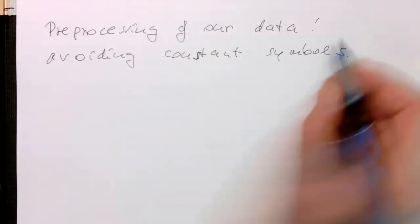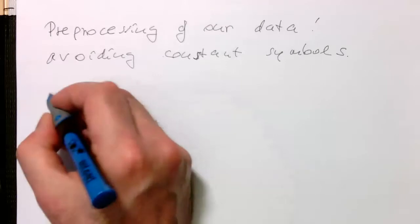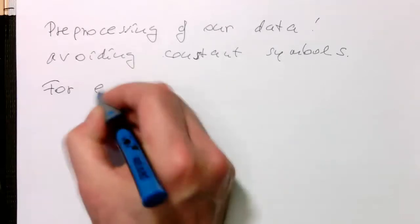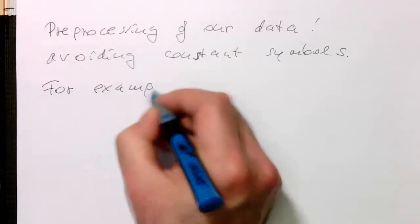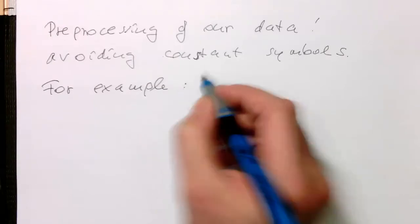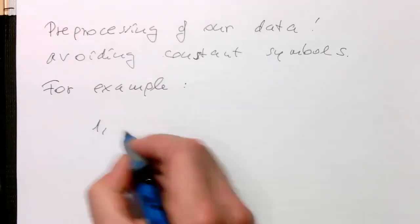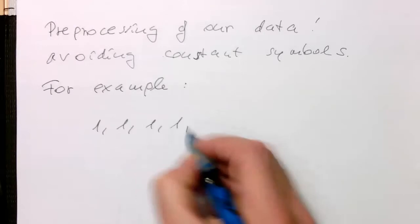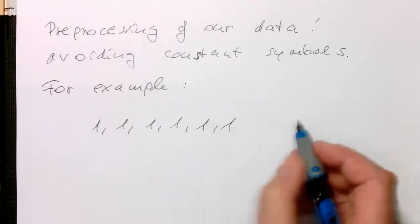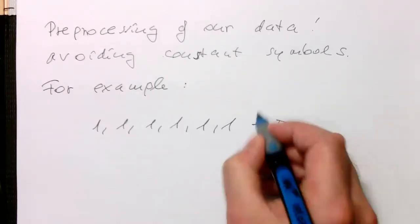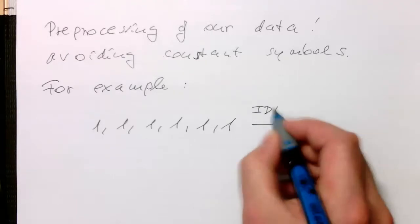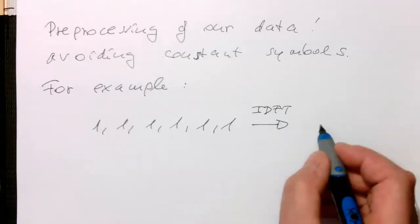Imagine for example if you have a sequence of one, one, one, one, and so if you're doing an IDFT of that, so inverse discrete Fourier transform,